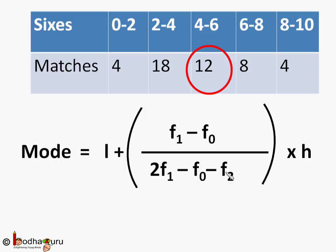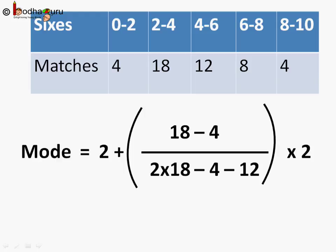So, let's find the mode of the given data, that is probably how many sixes did he hit in most of the matches. So, here L equals 2, H equals 2, F1 equals 18, frequency of the modal class, F0 equals frequency of the class preceding the modal class, which is 4. And F2 equals frequency of the class succeeding the modal class, which is 12.